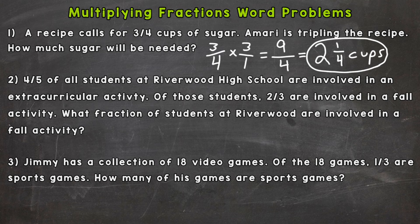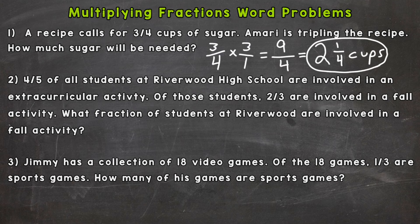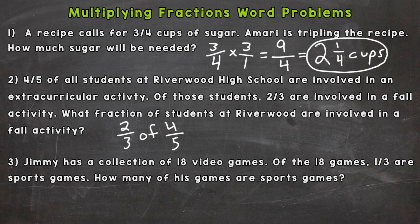Let's take a look at number two, which is a different type of word problem. Four-fifths of all students at Riverwood High School are involved in an extracurricular activity. Of those students, two-thirds are involved in a fall activity. What fraction of students at Riverwood are involved in a fall activity? Here we have a fraction of a fraction problem — we're taking a fraction of a fraction.